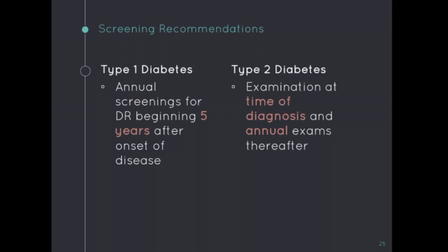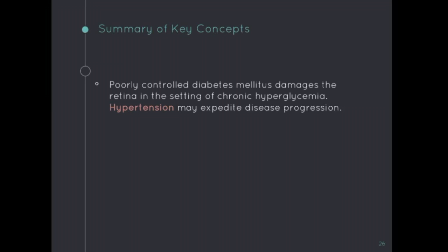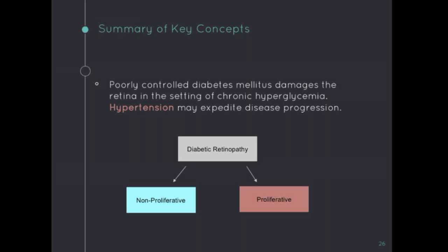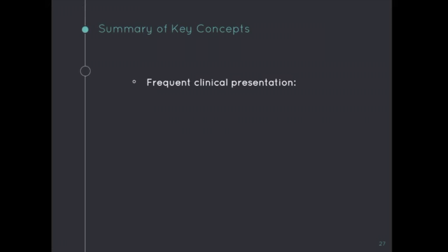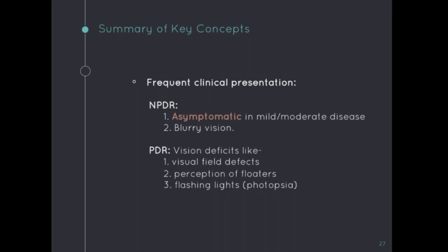To summarize, poorly controlled diabetes mellitus damages the retina in the setting of chronic hyperglycemia, but always keep in mind that hypertension may expedite the disease progression. Diabetic retinopathy is divided into non-proliferative and proliferative types, with the major difference being the presence of new vessel growth in the proliferative type. Patients with mild to moderate NPDR may be asymptomatic — underscoring the importance of routine screening — or they may experience blurry vision secondary to macular edema. Patients with PDR may present with visual field defects, floaters, or flashing lights, which may be indicative of retinal detachment and is a medical emergency. More mild presentations include blurry vision.